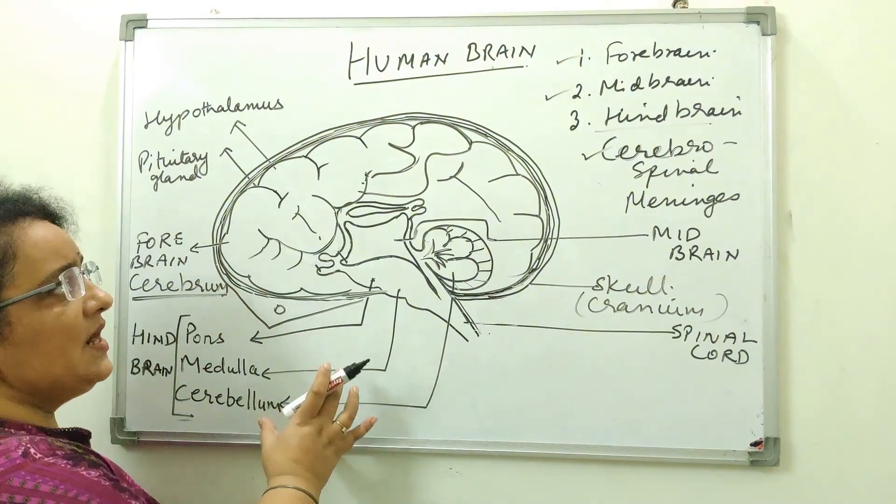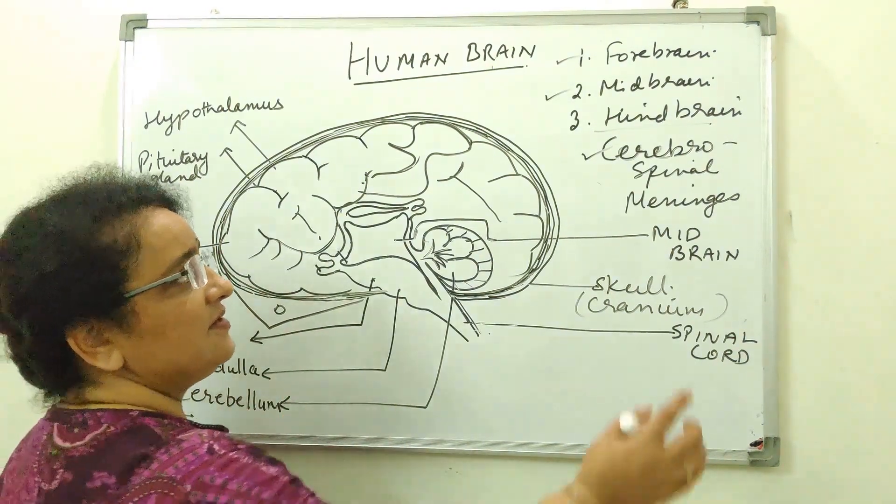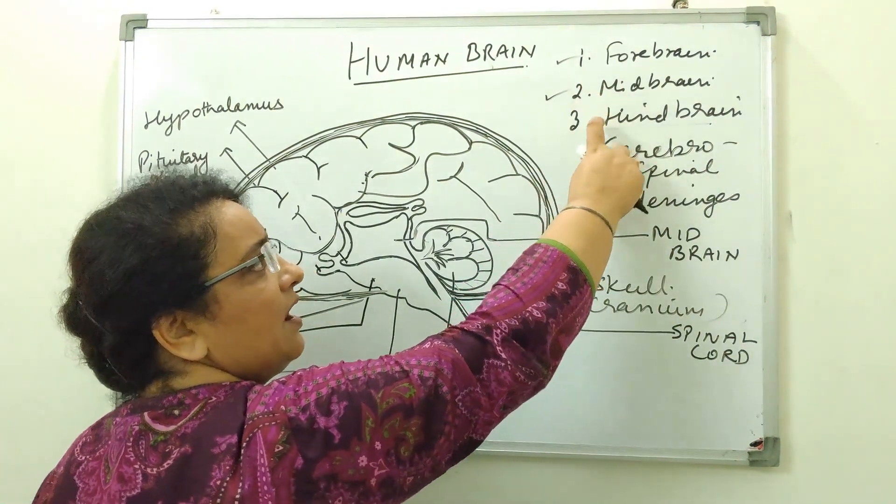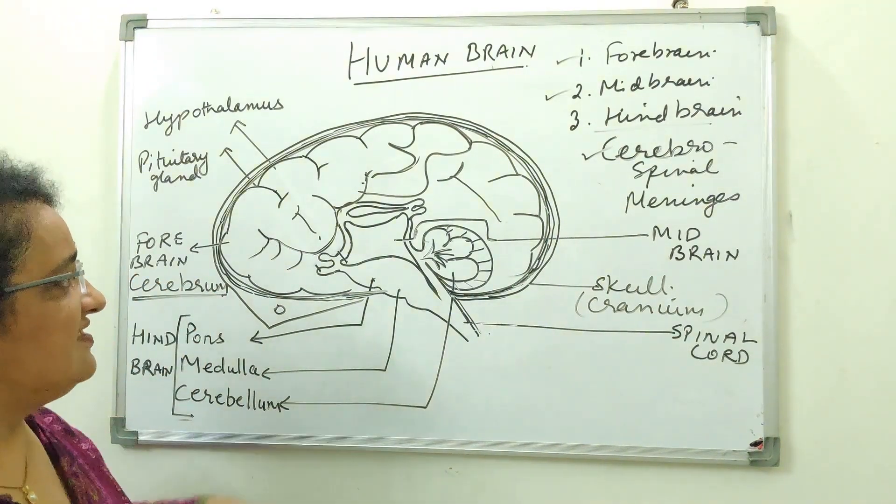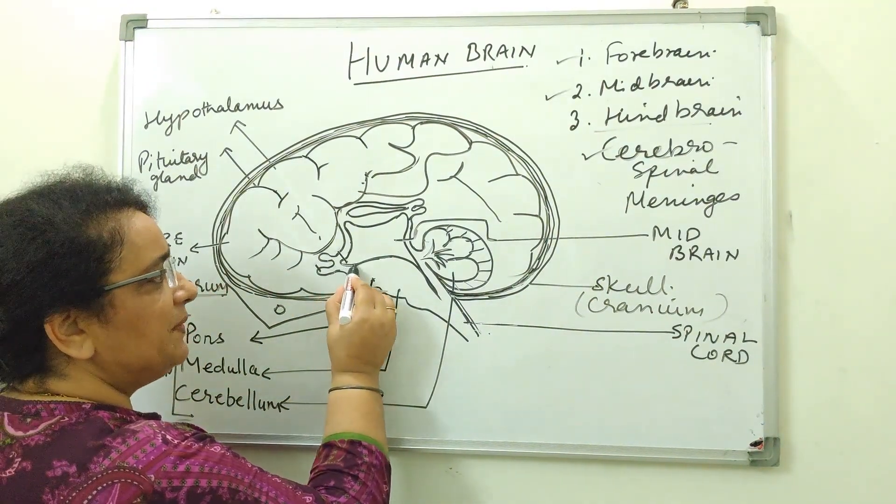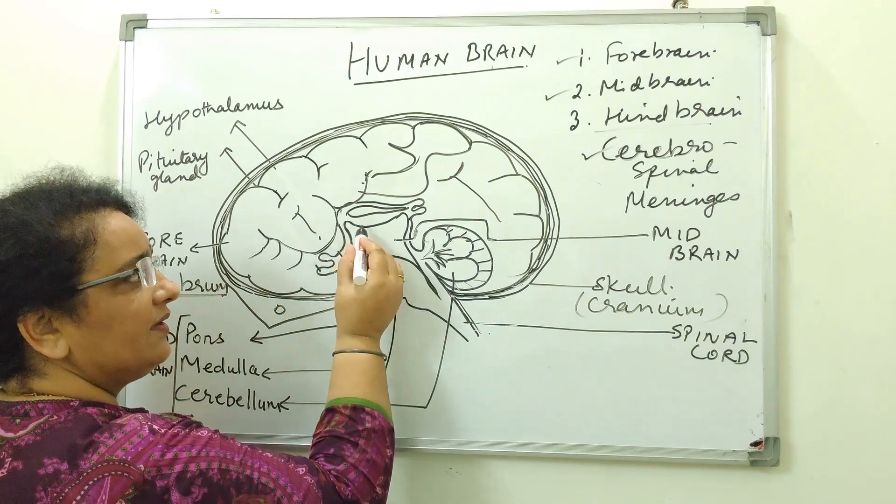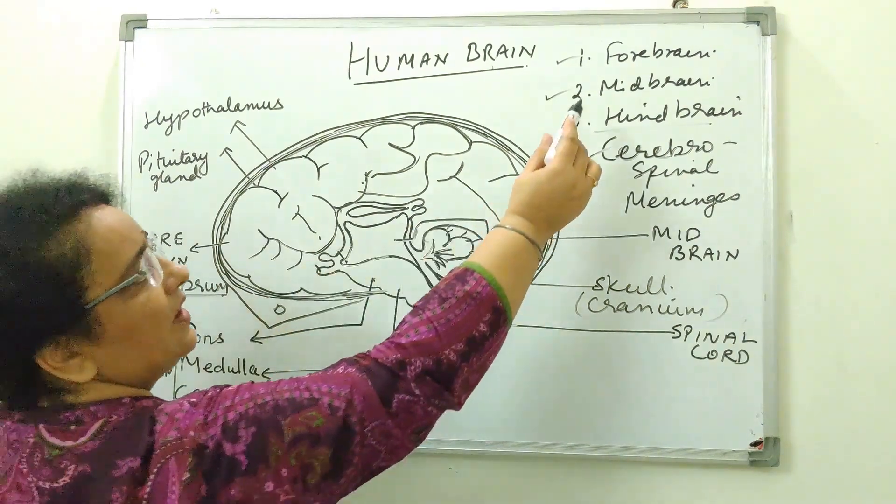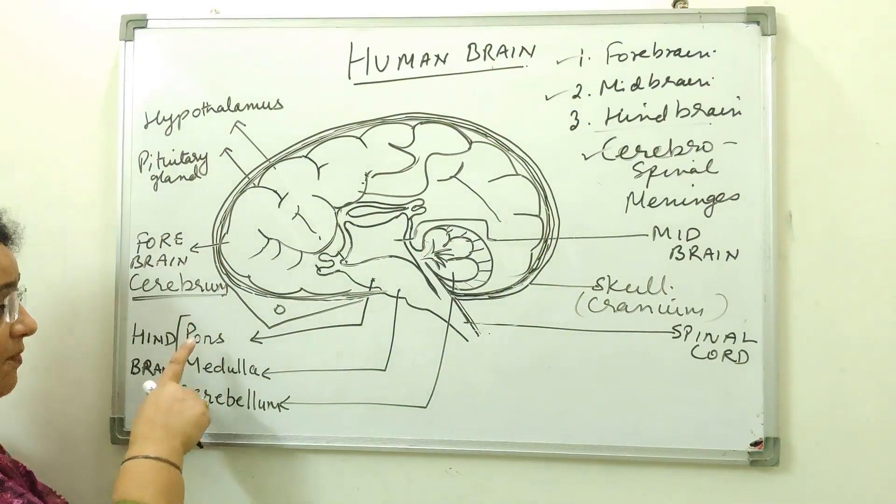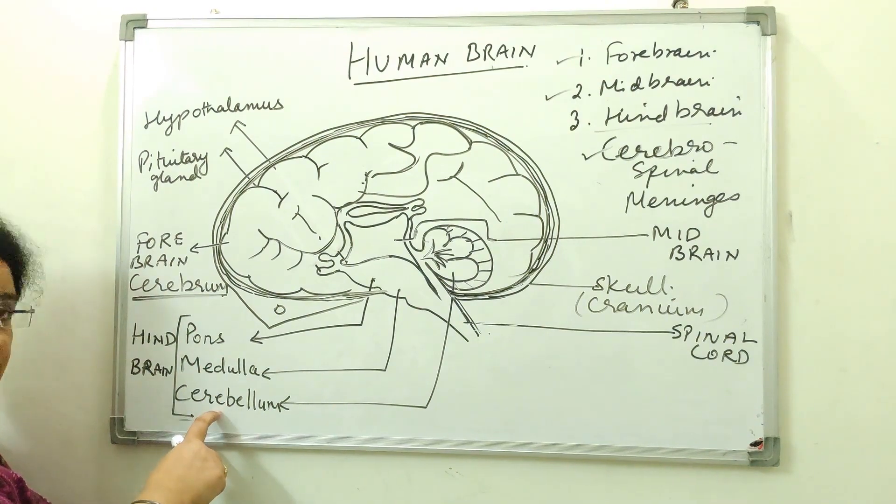So let's have a quick review. The brain consists of three parts. Forebrain, midbrain, hindbrain. And we started this diagram with this midbrain. And hindbrain, three parts. Pons, medulla, cerebellum. These are the three parts of hindbrain.